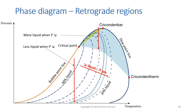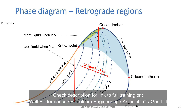This is why it is called a retrograde region — because we have retrograde condensates forming, meaning condensates that form as the pressure decreases, which is usually the opposite of what happens. Normally, as pressure decreases, you have less and less liquid and more and more gas.